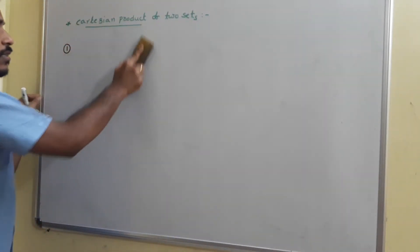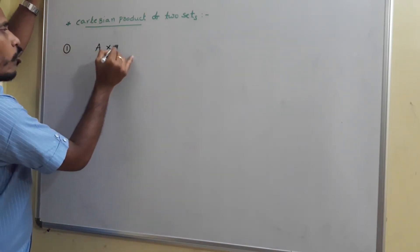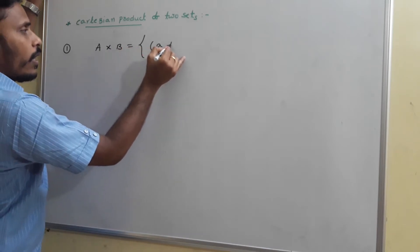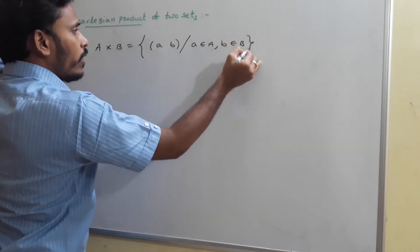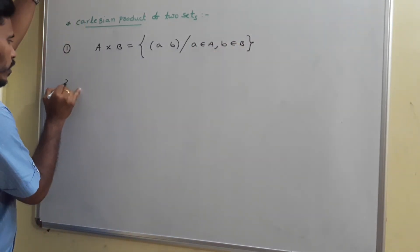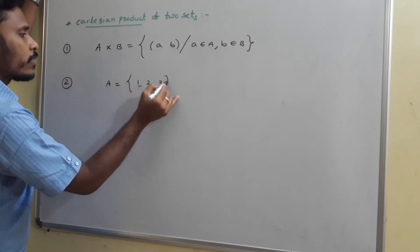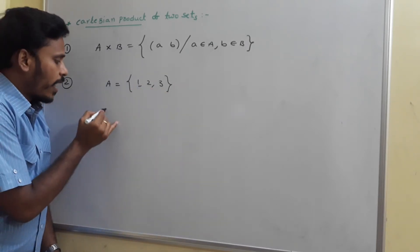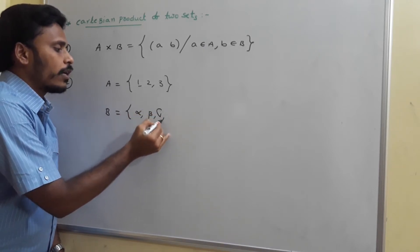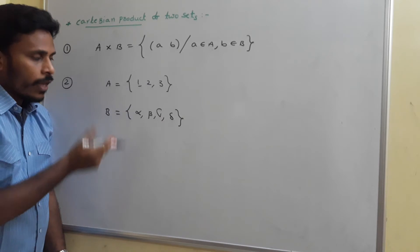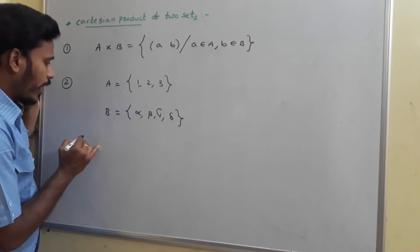By the work of René Descartes we have the definition: A cross B is simply a set of ordered pairs such that a is from the first set and b is from the second set. Now for an example, let set A contain elements 1, 2, 3 and set B contain elements alpha, beta, gamma, delta. What do you say about A cross B?